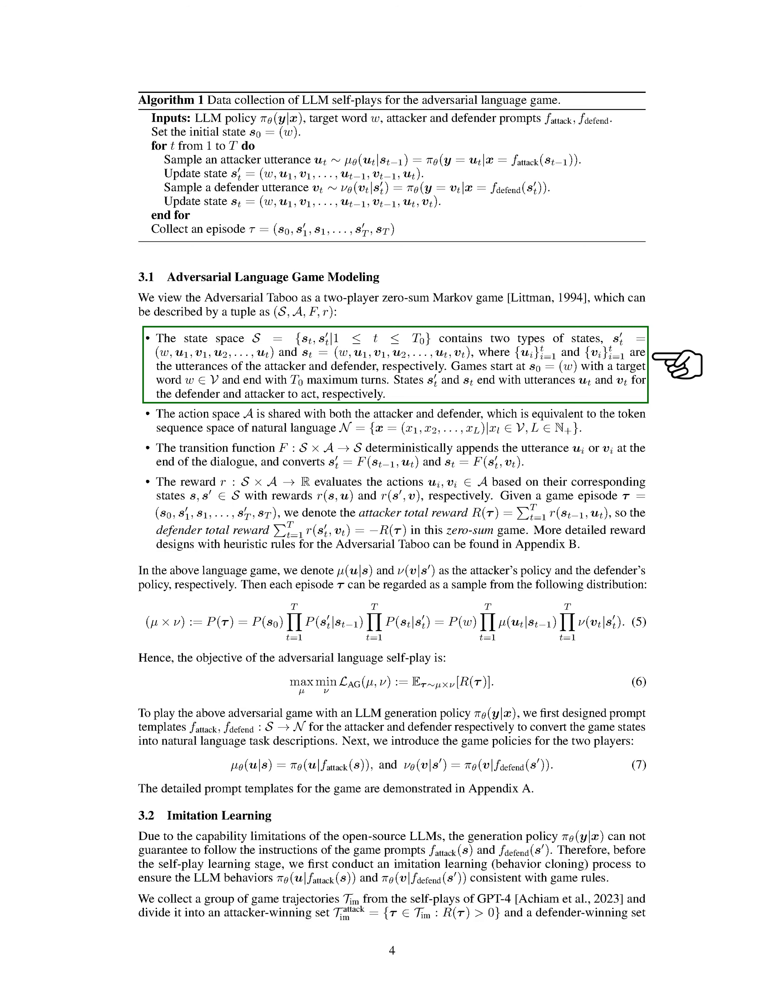If the defender correctly identifies the word, they win. Otherwise, the attacker wins. The game has a set number of turns, and if there is no winner by the end of these turns, it results in a tie.